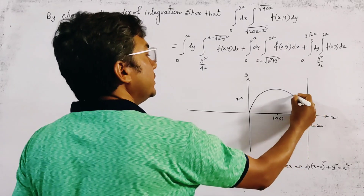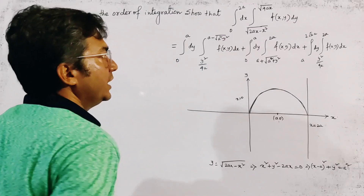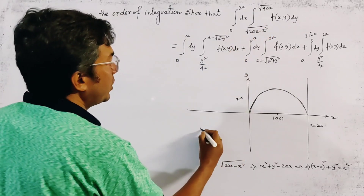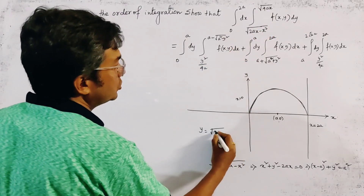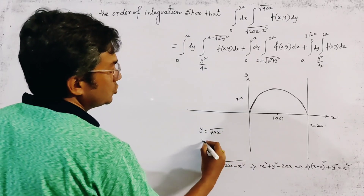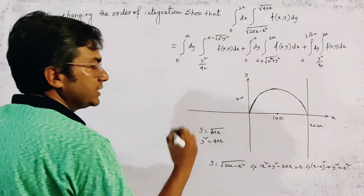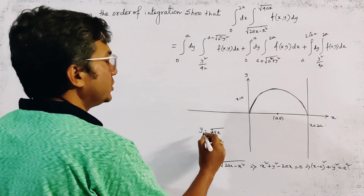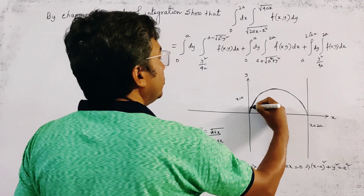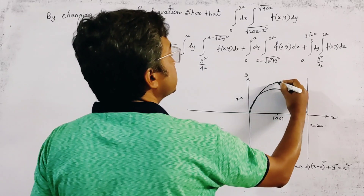The upper range is y = √(4ax), so y² = 4ax. This is the positive portion of the parabola. We draw only the positive side of the parabola.